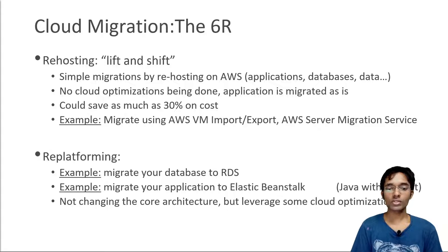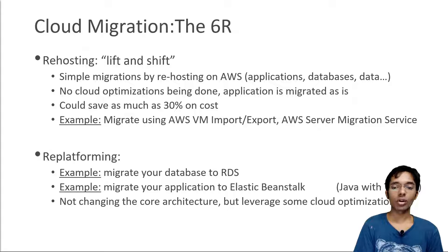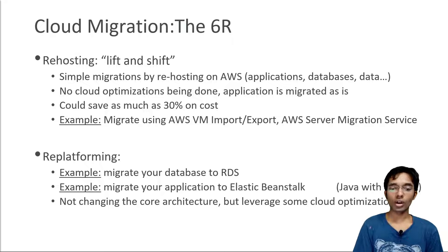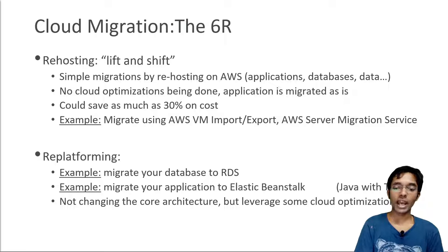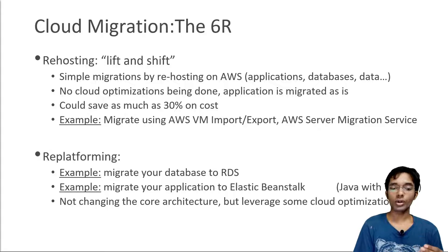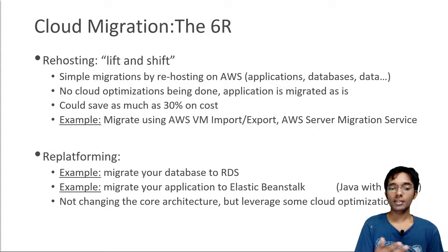We are moving an application from an on-premise system to AWS, which is why it's called a migration. The most simple way of doing this is rehosting, also called lift and shift — you take something on-premise and do the exact same thing on the AWS cloud. This is a simple migration where you are not leveraging any cloud optimization; your application runs the exact same way it did on-premise, but this time on AWS.